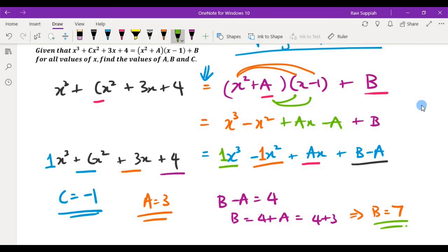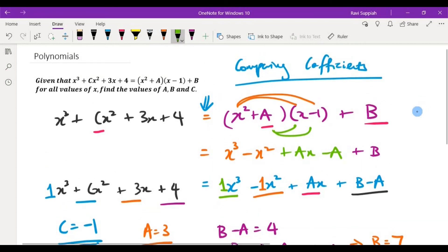So we have solved for all three unknown variables a, b, and c by using the method known as comparing coefficients.